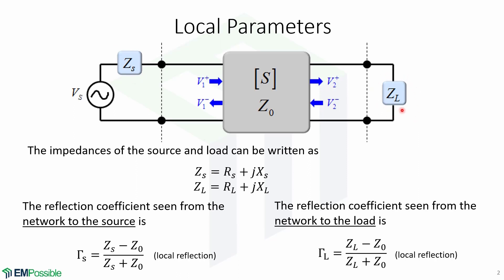First we're going to take a look at some local parameters. The impedances of the source and the load can be written as this, where Zs is the impedance of the source and Zl is the impedance of the load. The reflection coefficient seen from the network to the source is Gamma_s, which is equal to Zs minus Z0 over Zs plus Z0.